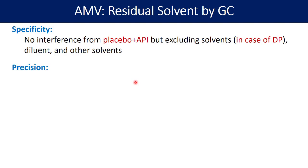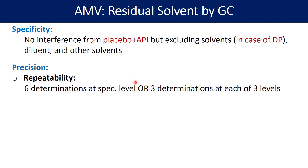The second important parameter when it comes to validation is precision. Precision can be determined at three different levels: repeatability, intermediate precision, and reproducibility. Let's understand how one can determine repeatability.